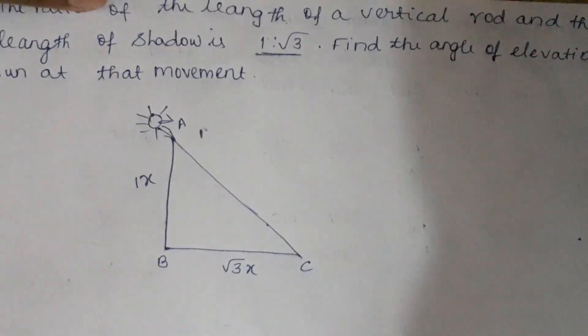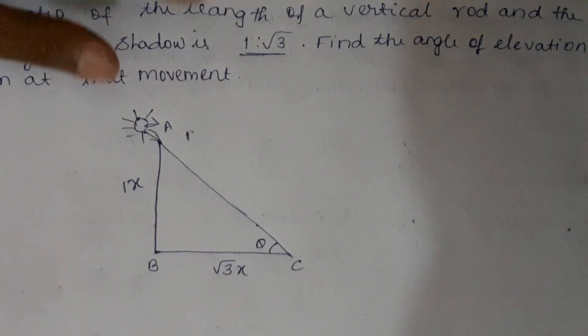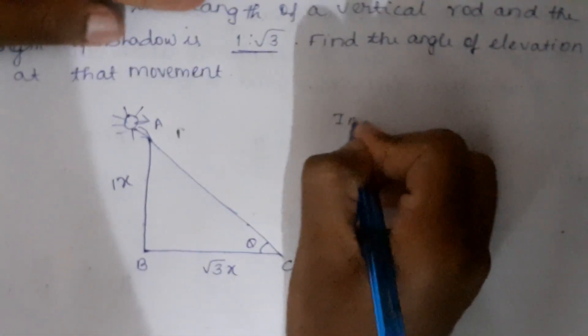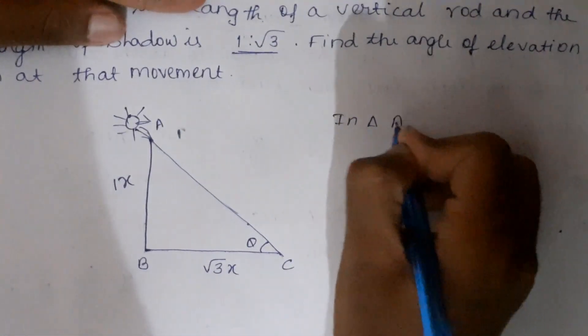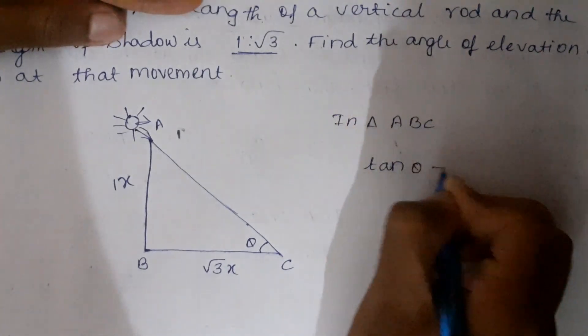Now we have to find the angle of elevation of the sun at that moment. For that, we will be able to write in triangle ABC: tan theta equals opposite side by adjacent side.